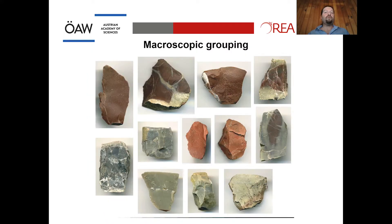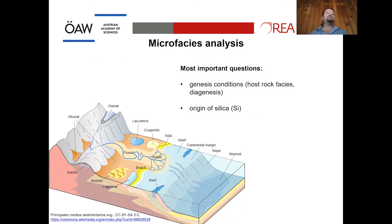Macroscopic grouping is intended to form homogeneous groups based on macroscopic criteria, which then have to be further investigated in subsequent analytical steps. The second stage is microscopic analysis, aiming at the reconstruction of the depositional environment of the investigated siliceous rocks — meaning the host rock facies and the origin of silica.